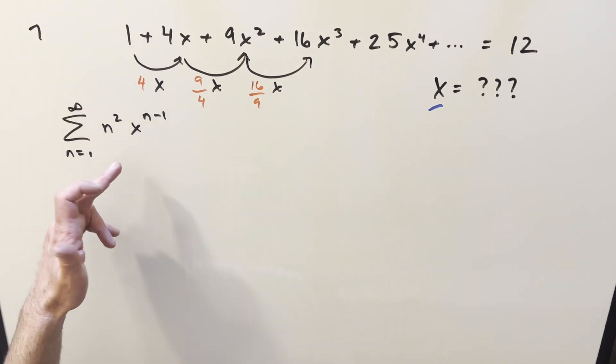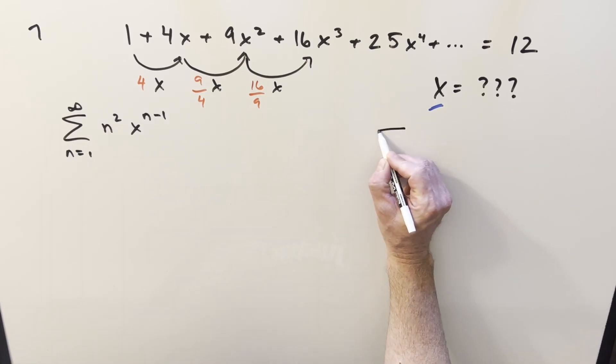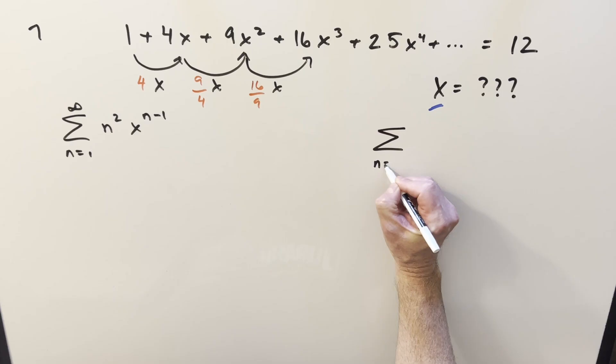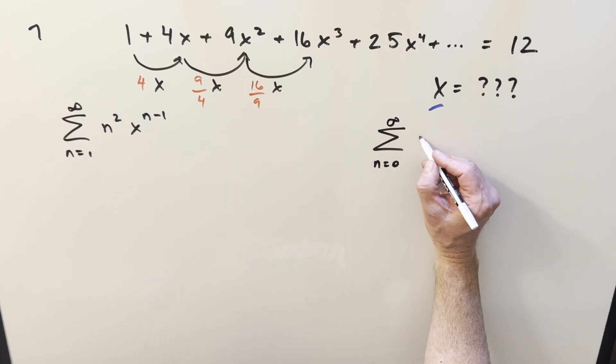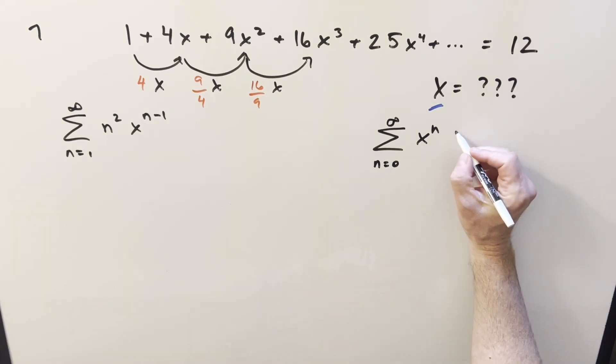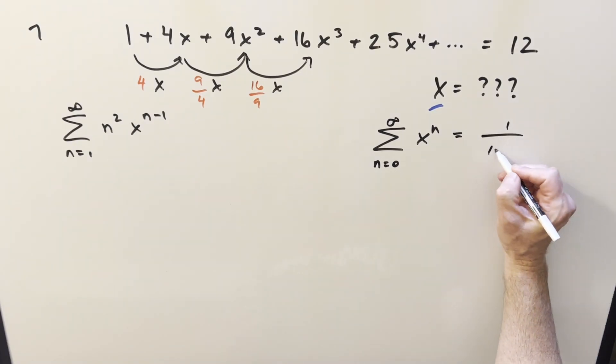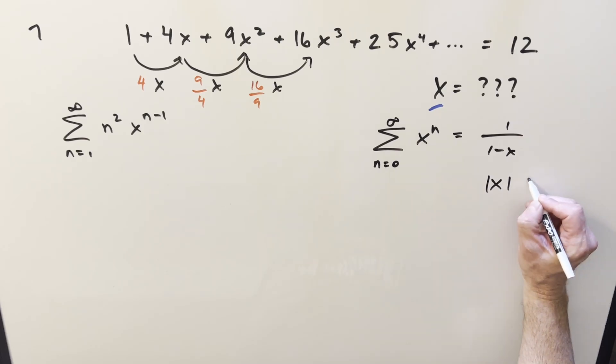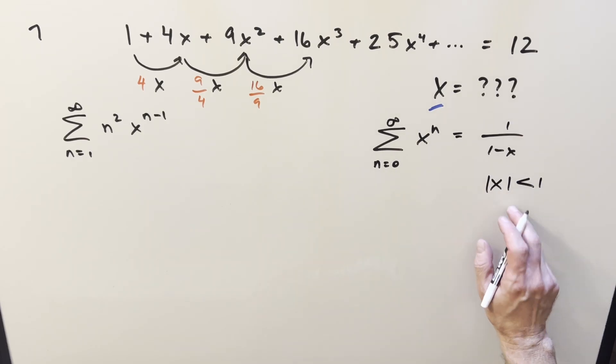We can notice it is really similar to our geometric series. What we can do is if we differentiate the geometric series, we're going to get something similar. Let's look at our geometric series. The geometric series formula is going to be n going from 0 to infinity of x to the n, and this is going to be just the same thing as 1 over 1 minus x, assuming absolute value of x is less than 1. We need this for our convergence.